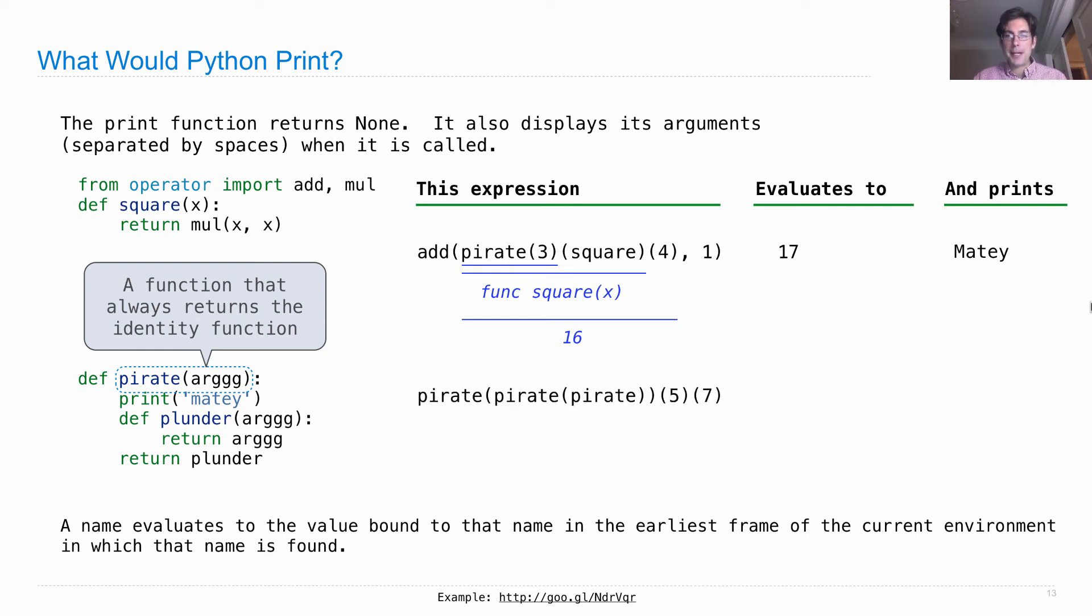If I pirate(pirate(pirate(5)))(7), what happens there? In order to evaluate the whole thing, I evaluate this operator, which has itself a compound operator, which itself has a compound operator. The first thing I do is I pirate this pirate, which prints matey and then returns the identity function. I call pirate on that, I'll print matey again and return the identity function, which I call on 5, so I get back 5. Everything before this line evaluates to 5, which is a number. When I try to call a number, I get an error.